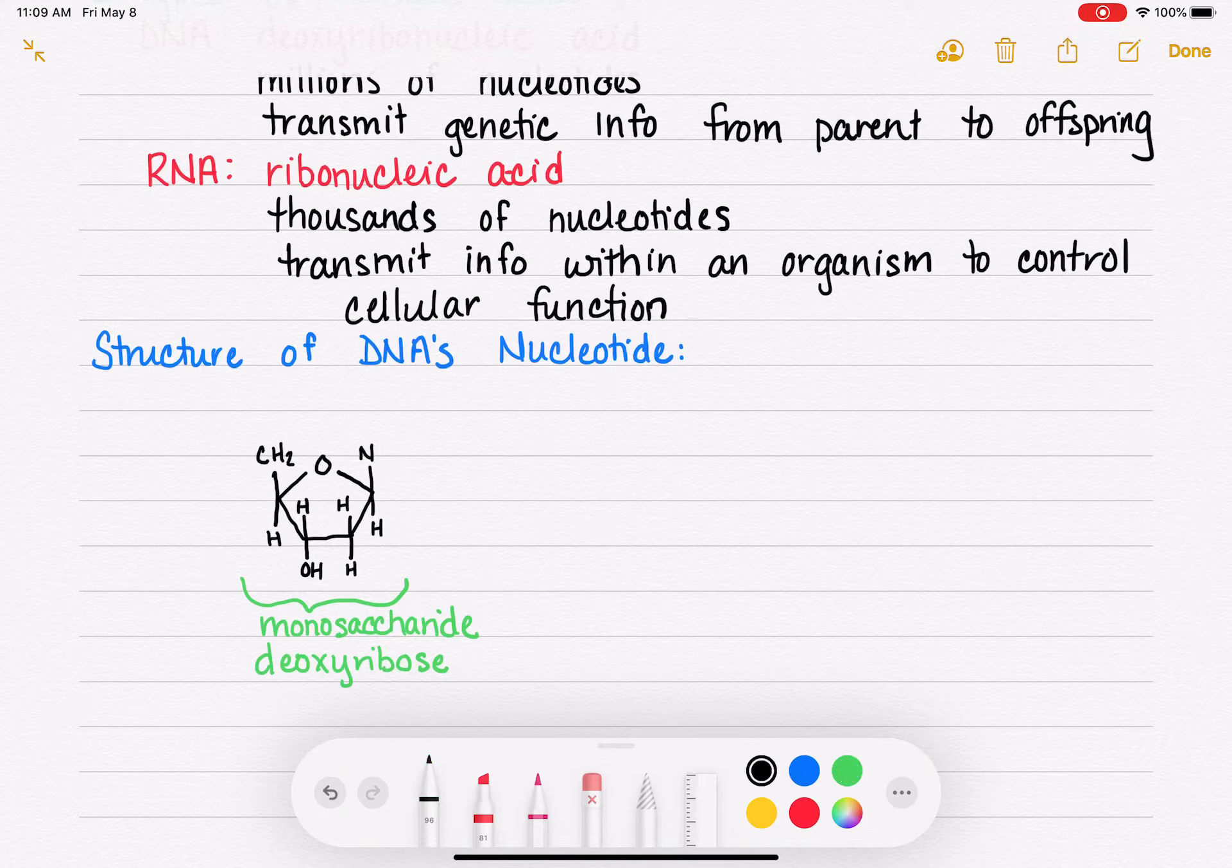So attached to this monosaccharide over to the left, we have a phosphate group, which we have seen phosphates before. So that's a phosphorus that has four oxygens around it. One of the oxygens is double bonded to the phosphorus. The others are single bonded. Two of the oxygens have negative formal charges on it. So this is our phosphate.